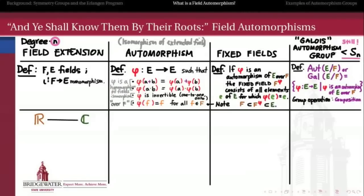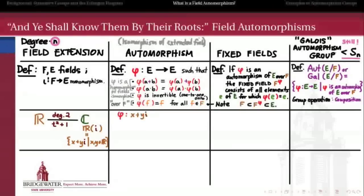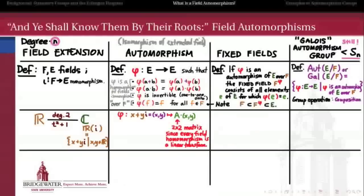As our first example, let's look at the complex field as an extension of the field of real numbers. Every element of ℂ can be written as a linear combination of 1 and i — it's R adjoined with i — and the minimal polynomial of this finite extension is t² + 1, so it's degree 2. Since every element is x + yi, all automorphisms are functions sending x + yi to something determined by a 2×2 matrix, because every field homomorphism is a linear transformation. With basis {1, i} and dimension 2, we have a 2×2 matrix representing our transformation.